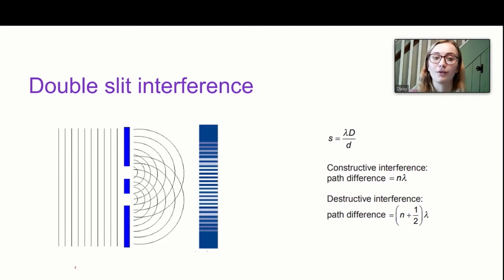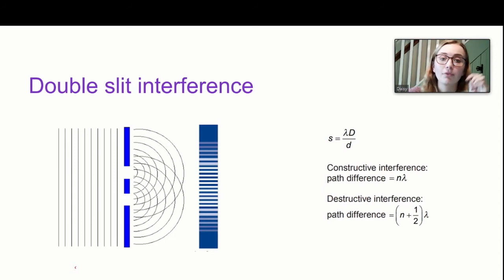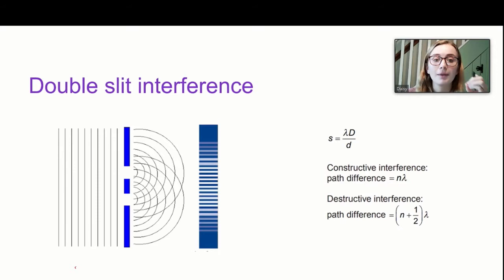To get constructive interference, the difference in the distance those two beams have travelled must be a whole number of wavelengths, to ensure they are in phase when they meet. The dark spots are caused by destructive interference, where the waves meet completely in antiphase — there must be a half-wavelength path difference so that a peak on one wave meets a trough on the other, and the waves completely cancel each other out.